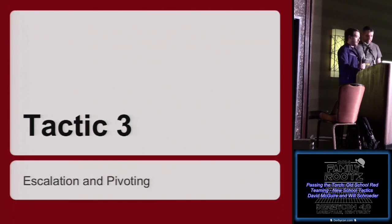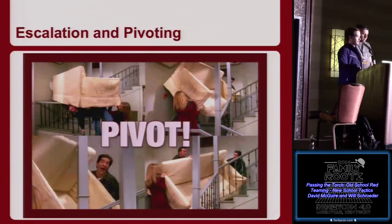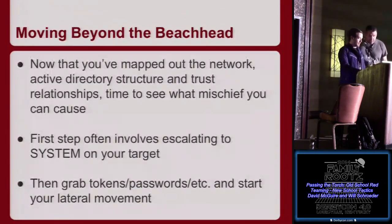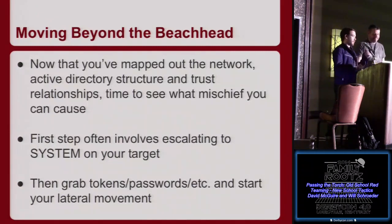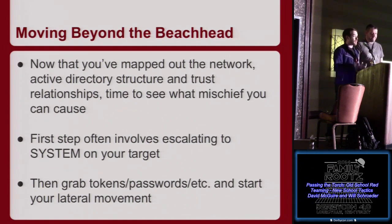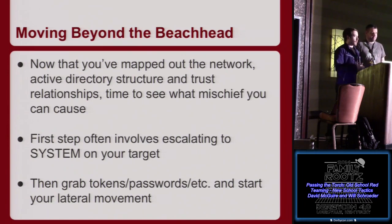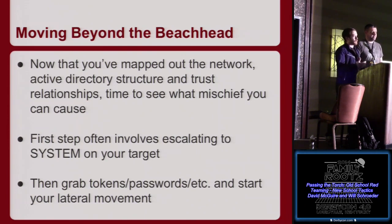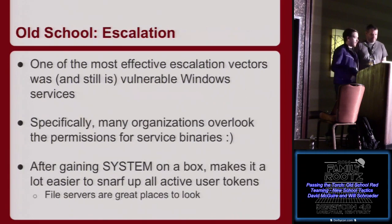The third tactic is escalation and pivoting. Moving beyond the beachhead — now that you've mapped your network, abused Active Directory, got user information, and mapped your domain trust, you want to see what mischief you can get into. Where can you move laterally? This is why we love Windows — it really facilitates lateral movement. The first step usually involves escalating privileges on your target. If you want to interact with LSASS, steal tokens, impersonate users, you need to be running in God mode on the system.